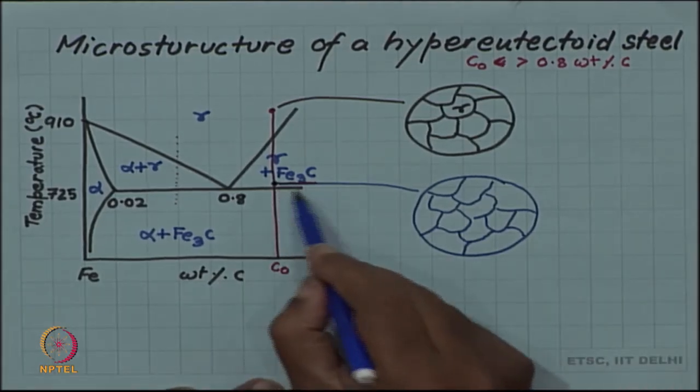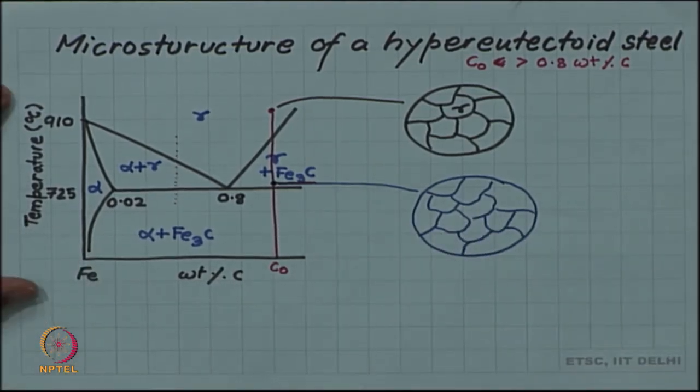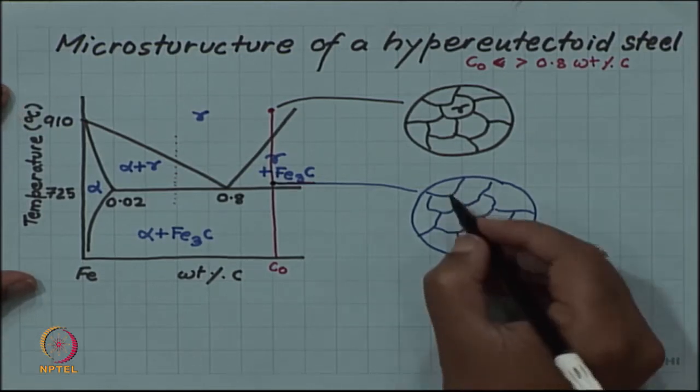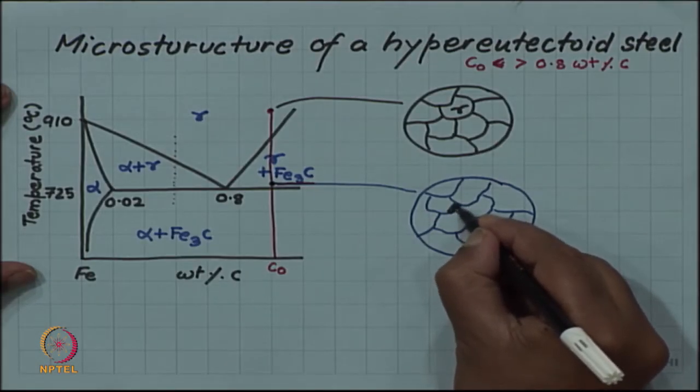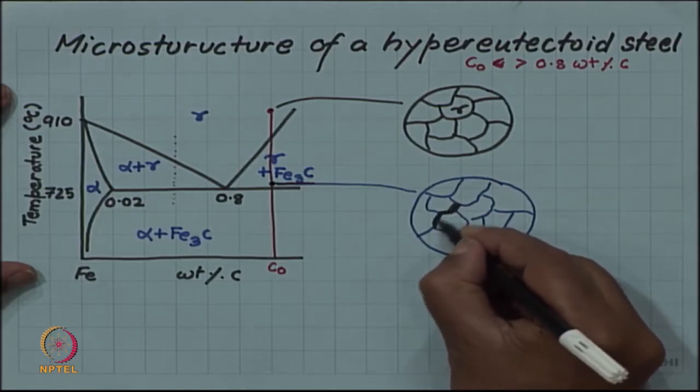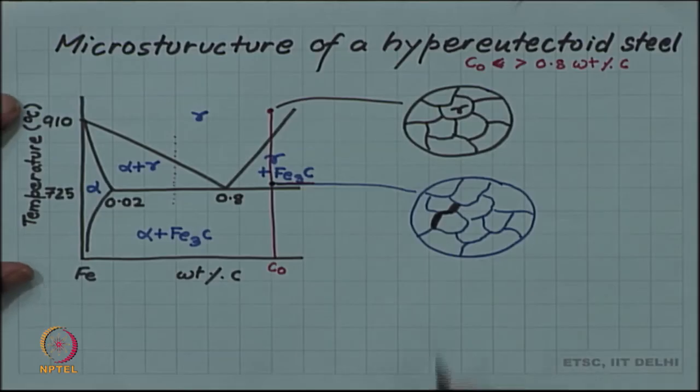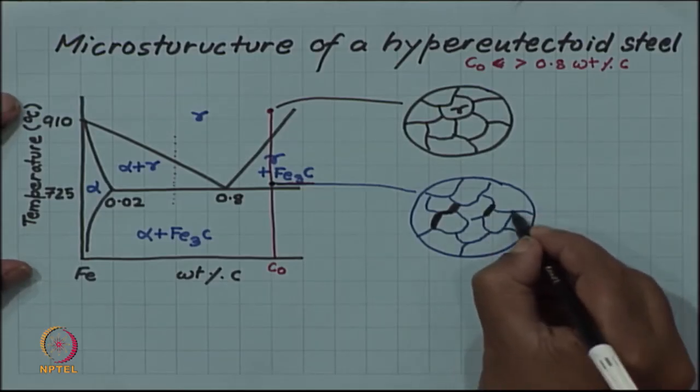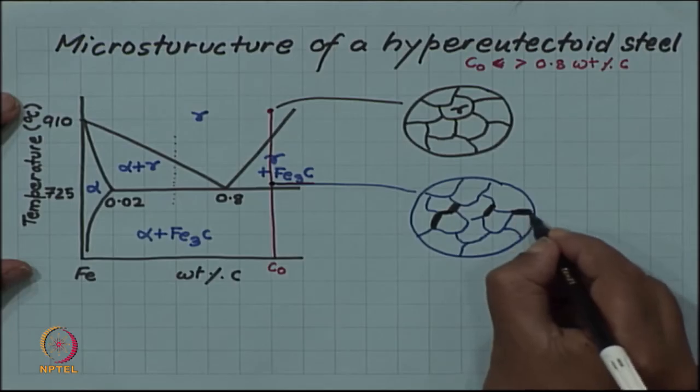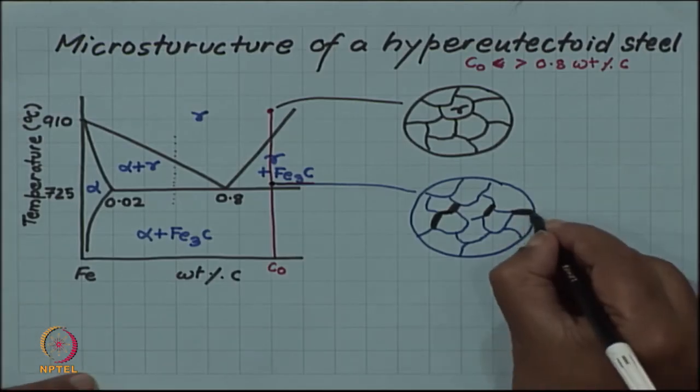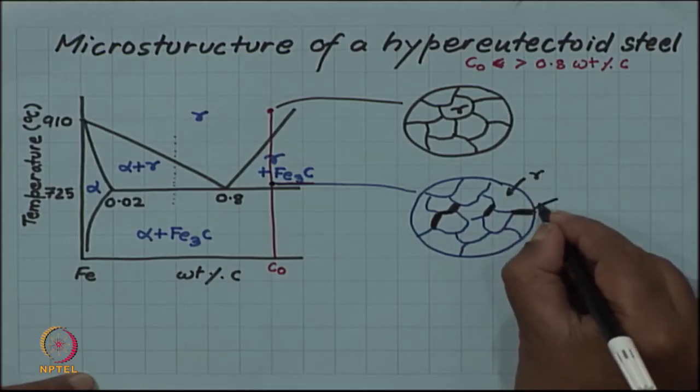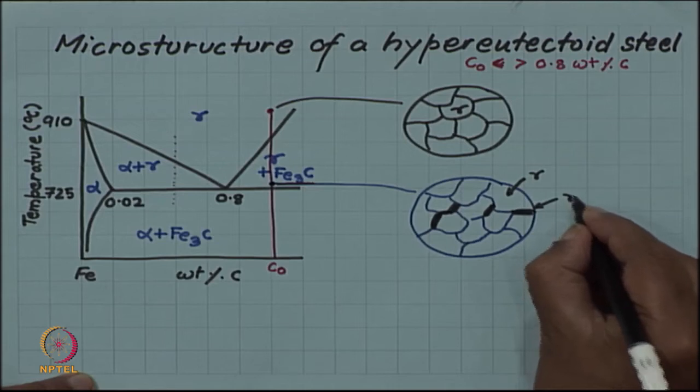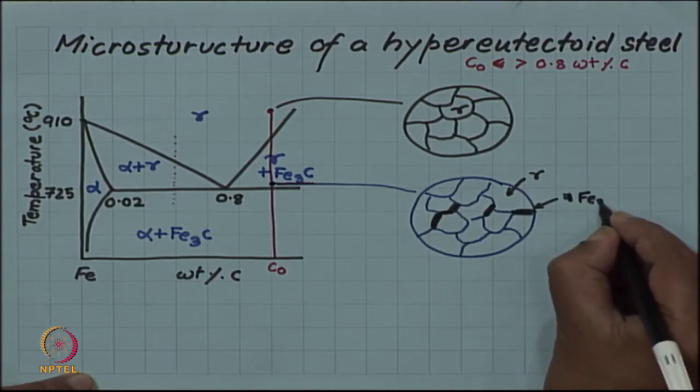The amount of gamma which will form, first of all remember that the Fe3C which forms starts forming on the grain boundaries. You will have grain boundaries where Fe3C will first form. Here you have original austenite and then this is Fe3C which is forming.